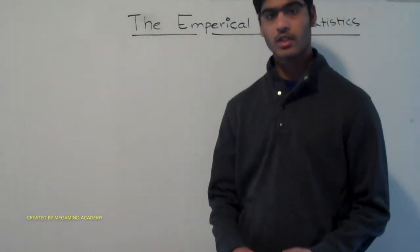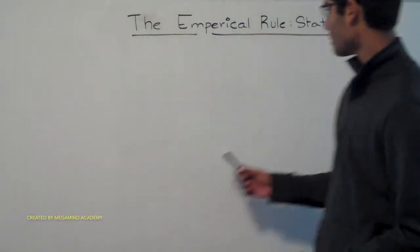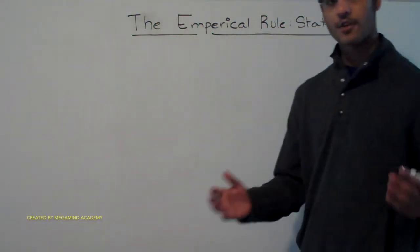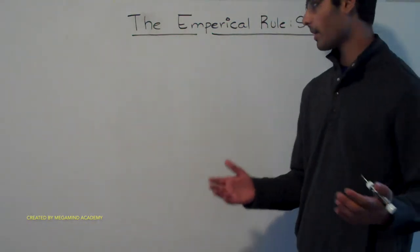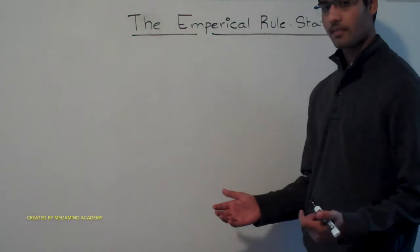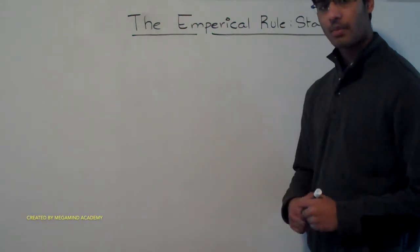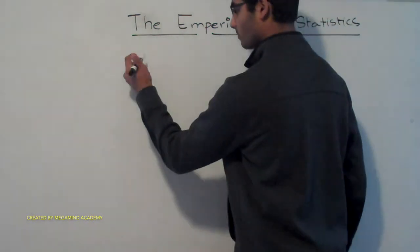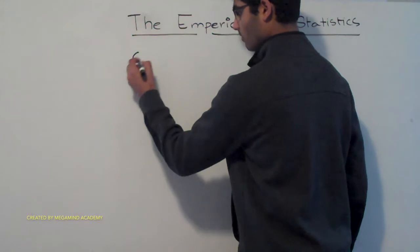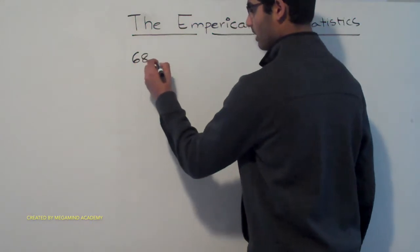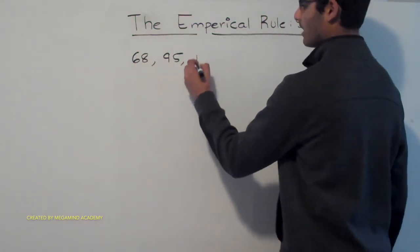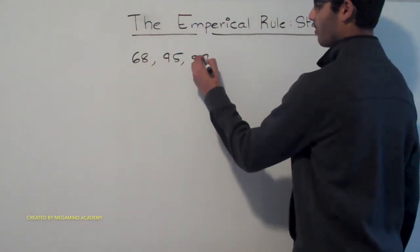Hi! Today we're going to learn about the empirical rule in statistics. So before we get started, let's first figure out what the empirical rule is. The empirical rule is also called the 68-95-99 rule.